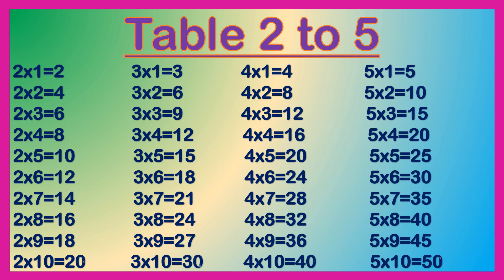5 1s are 5, 5 2s are 10, 5 3s are 15, 5 4s are 20, 5 5s are 25, 5 6s are 30, 5 7s are 35, 5 8s are 40, 5 9s are 45, 5 10s are 50.